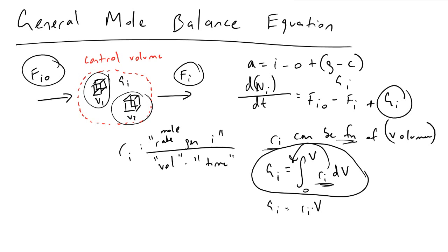To give the final formula for our general mole balance equation for all the reactors we're going to work with in our chemical reactor design class, we have: the rate of accumulation of the number of moles of species i equals the moles of i coming into our reactor minus the moles of i leaving our reactor.